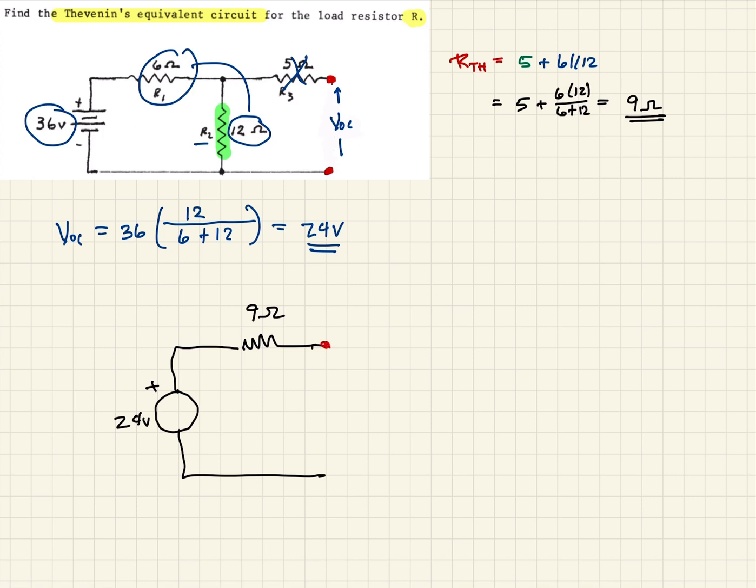which is our Thevenin resistance of 9 ohms. And again, this is where the terminals are that we were originally considering. So we could replace everything between these two red terminals with this and it should function the same once the load resistance is put back on.